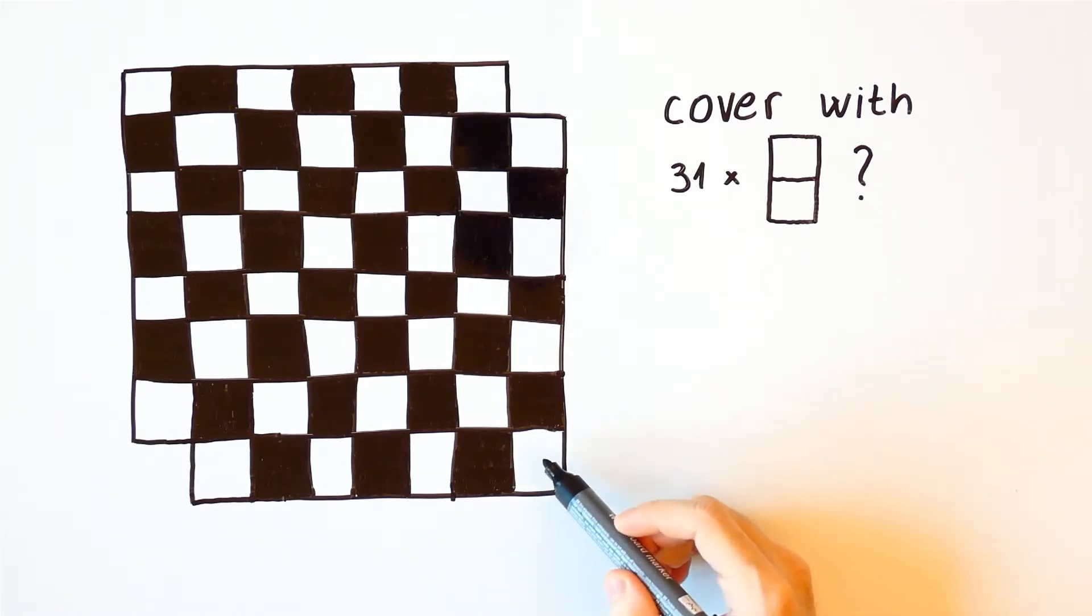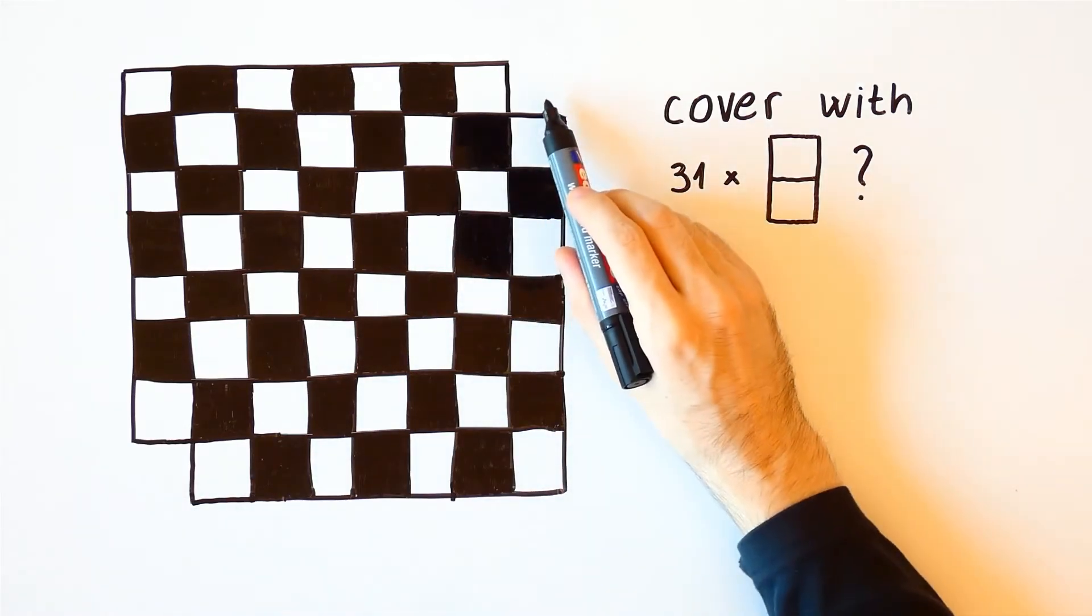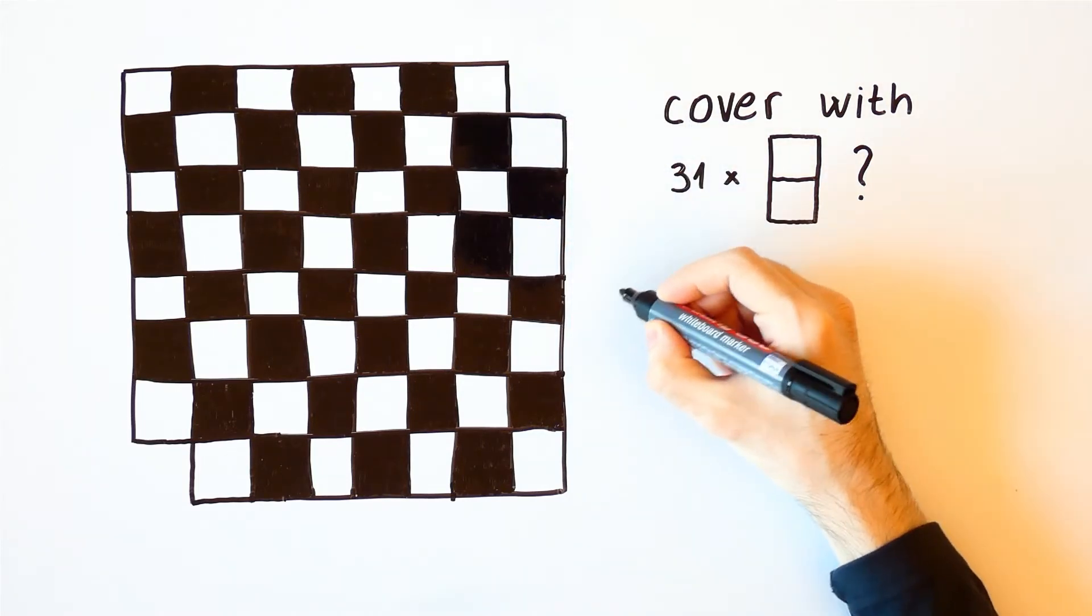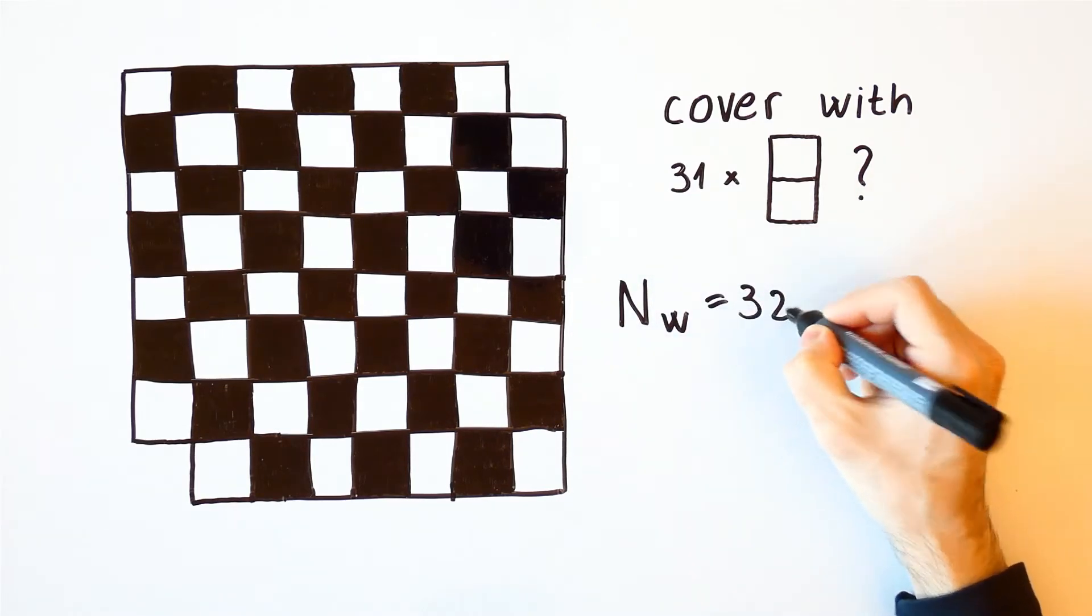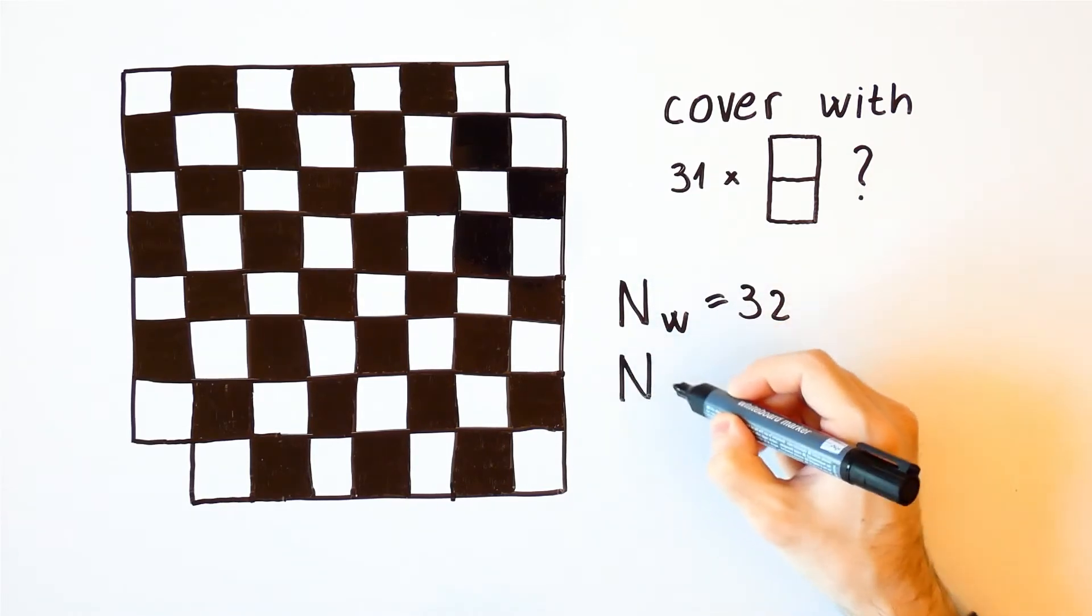Initially this chessboard had 32 white and 32 black squares. However, opposite corners have the same color and we removed two black squares, so our mutilated chessboard has 32 white and 30 black squares.